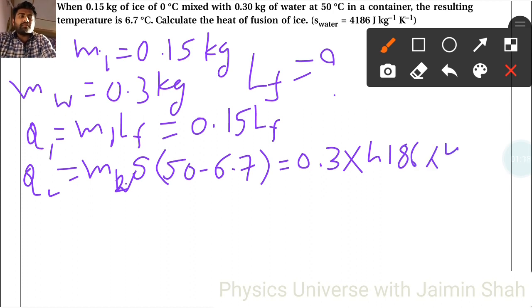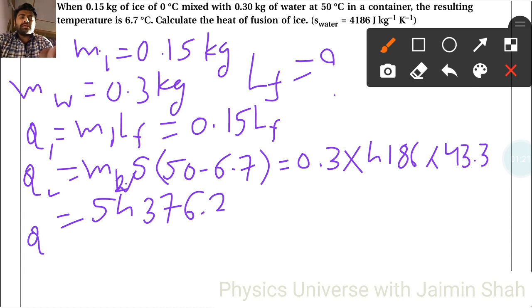50 minus 6.7 is 43.3, so this equals 54,376.2.